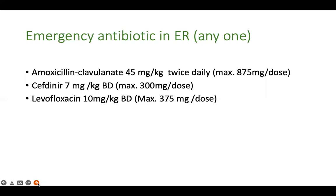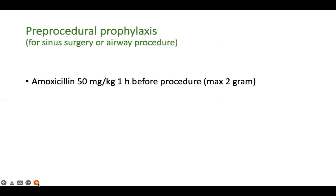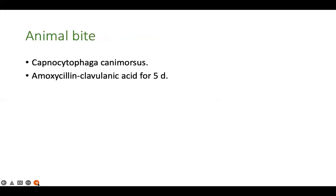For empiric antibiotic treatment when an asplenic patient develops fever, options include amoxicillin-clavulanic acid combination, cefdinir, or — for older children, adolescents, or adults — levofloxacin. For pre-procedural prophylaxis, amoxicillin 50 mg/kg one hour before the procedure is used. For animal bites, which can cause severe sepsis due to Capnocytophaga, patients should receive prophylactic treatment with amoxicillin-clavulanic acid at the prescribed dose for five days.